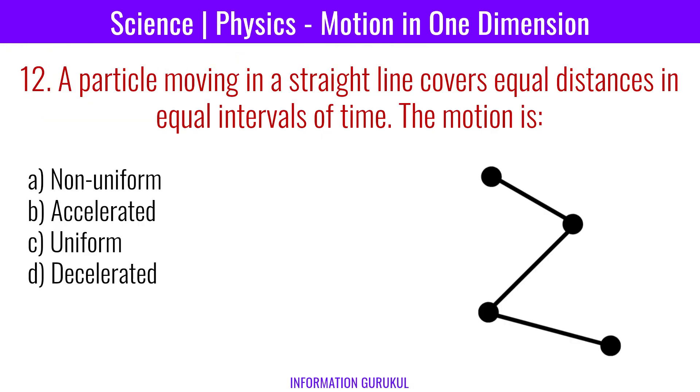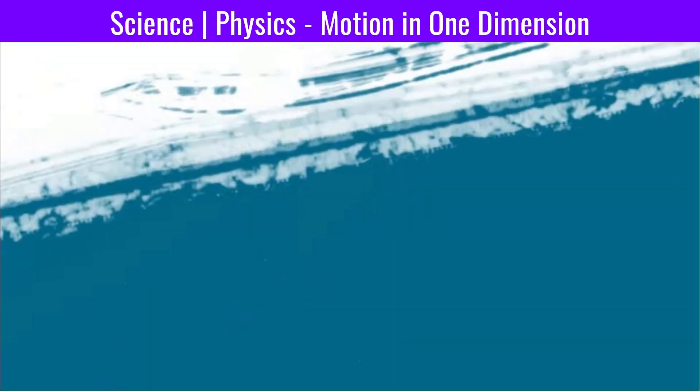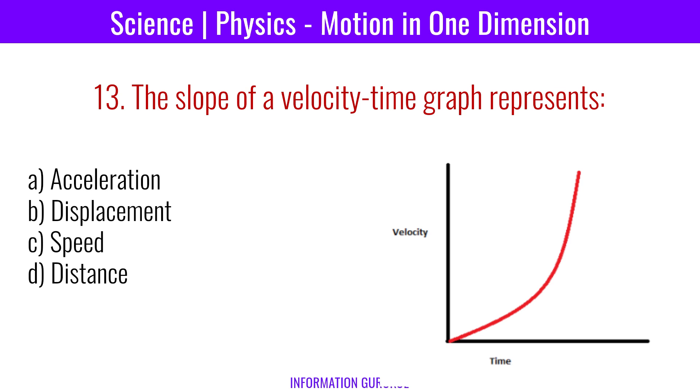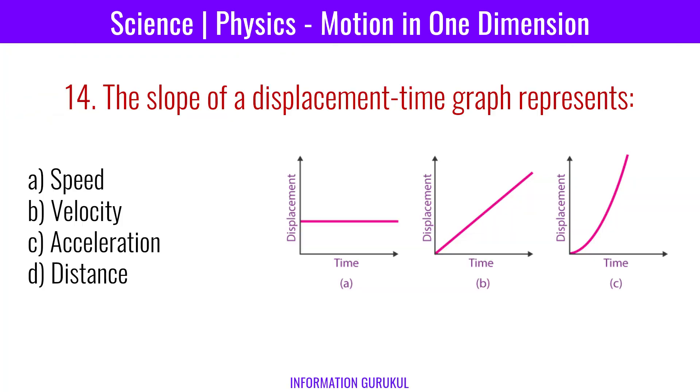A particle moving in a straight line covers equal distances in equal intervals of time; the motion is uniform. The slope of a velocity-time graph represents acceleration. The slope of a displacement-time graph represents velocity.